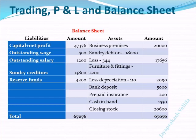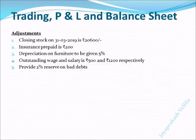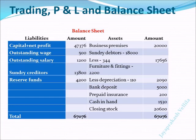All adjustments are now brought to the balance sheet. Next, bank deposit is an asset. Then prepaid insurance — another adjustment of 200 — is an asset, as it is insurance already paid that only needs to be paid in the next year. Next, cash in hand is 1,530 and closing stock is 20,600. After entering the closing stock in the trading account, we also enter it in the balance sheet. So closing stock appears in two places: one in the trading account and another in the balance sheet.